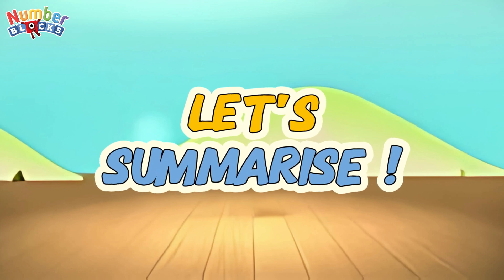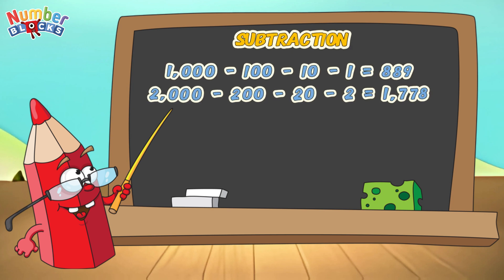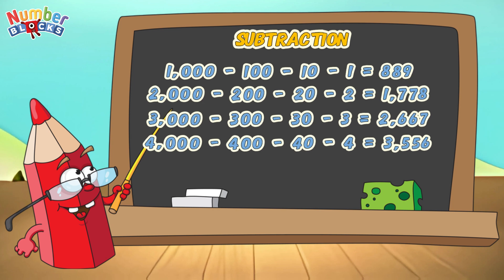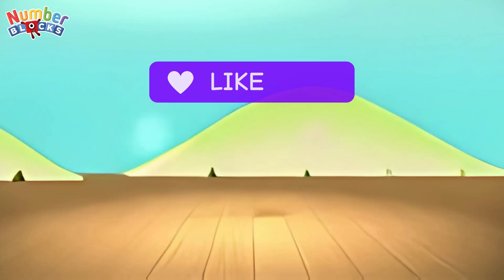Join me and let's summarize! Let's learn subtraction! One thousand minus one hundred minus ten minus one is equals to eight hundred and eighty-nine! Two thousand minus two hundred minus twenty minus two is equals to one thousand seven hundred and seventy-eight! Three thousand minus three hundred minus thirty minus three is equals to two thousand six hundred and sixty-seven! Four thousand minus four hundred minus forty minus four is equals to three thousand five hundred and fifty-six! Five thousand minus five hundred minus fifty minus five is equals to four thousand four hundred and forty-five!